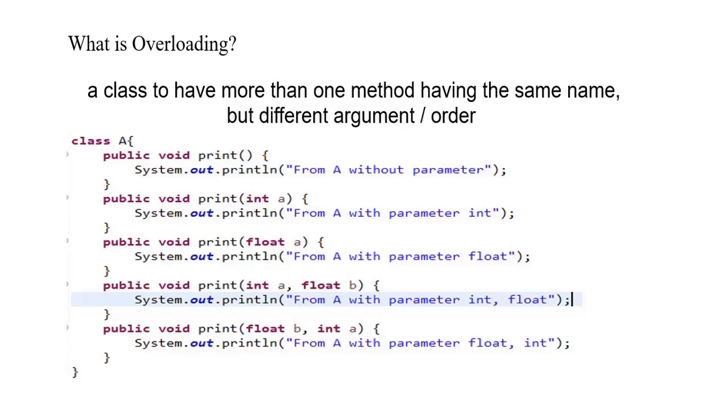We are calling it overloading. Moreover, you can look into the second last and last method of print where we see that int a and float b, and in the last one float b and int a. The order is different so we are calling it again as overloading.